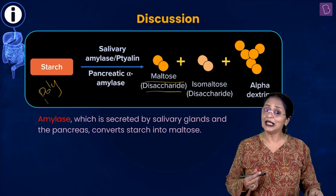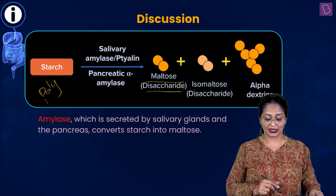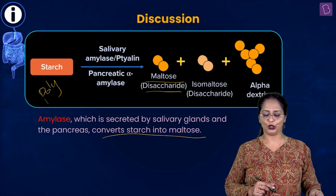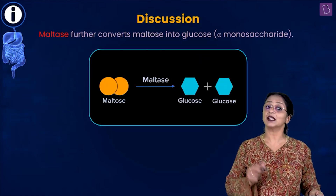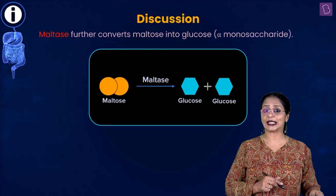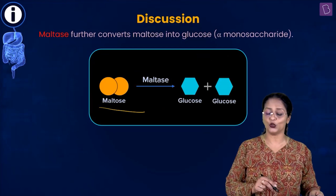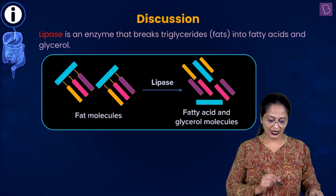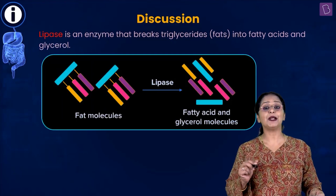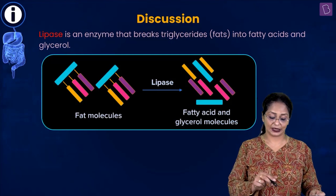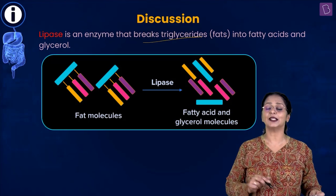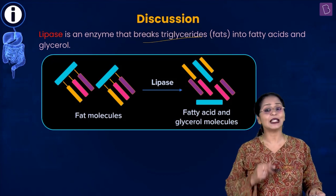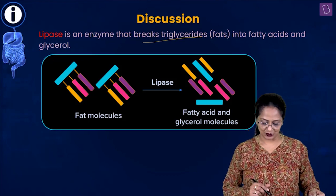Amylase, which is secreted by the salivary glands and the pancreas, converts starch into maltose. Then maltase further breaks down maltose into the monosaccharide glucose. Lipase acts upon lipids — it breaks triglycerides into diglycerides, monoglycerides, and finally into fatty acids and glycerol.